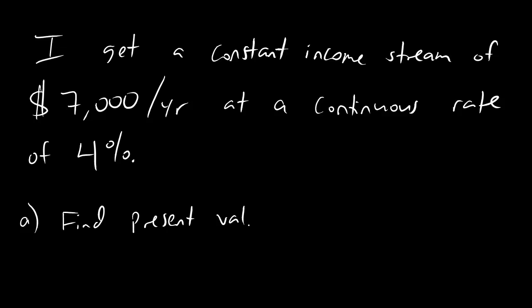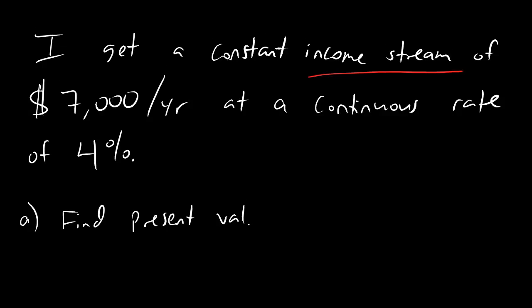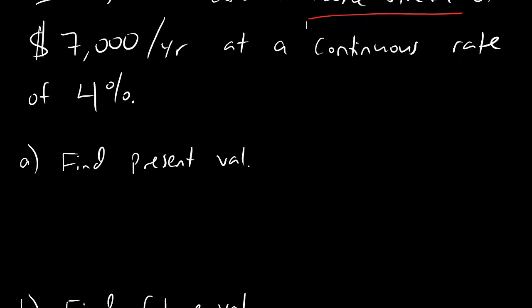Keep in mind that we have two different kinds of present values we can find. Present value from the Chapter 1 stuff, which was easy and from a single initial deposit, or present value from an income stream — and that uses integrals. So, present value using an income stream looks like this.